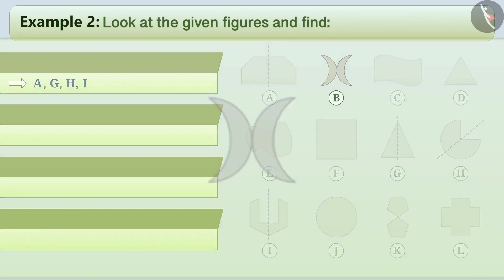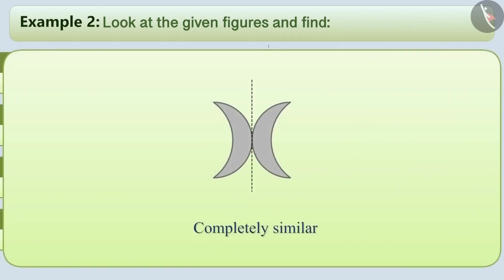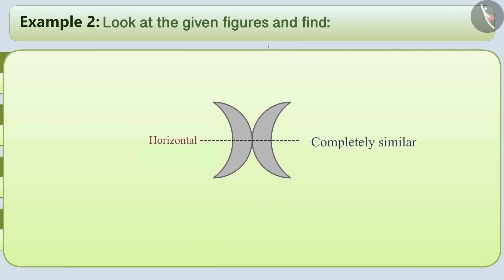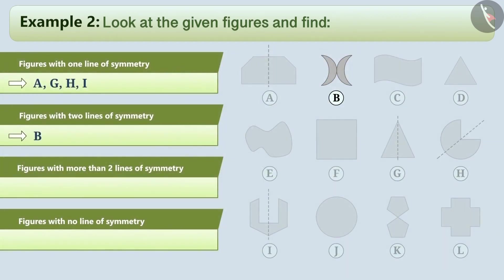If we talk about figure B, then by folding it vertically into two halves, the two parts cover each other completely. Similarly, by folding it horizontally into two parts, the figure is also divided symmetrically. There are no other lines which divide the figure into two equal halves. Hence, figure B has two lines of symmetry. Apart from this, figure K also has two lines of symmetry. Thus, figures B and K are the only two figures which have two lines of symmetry.